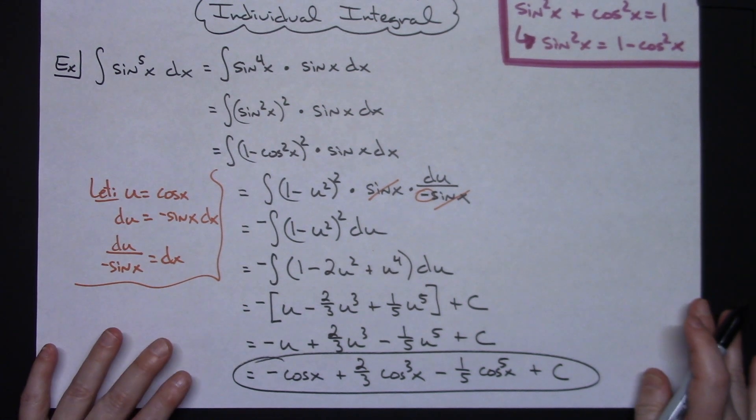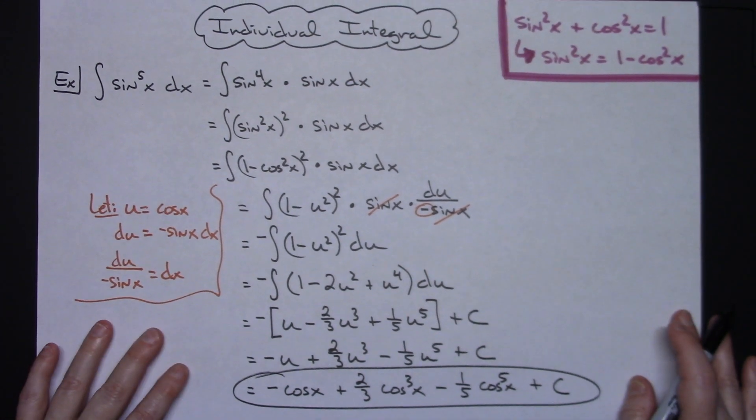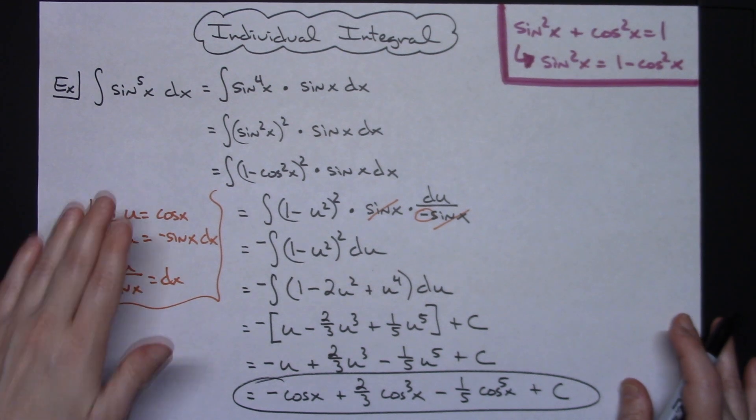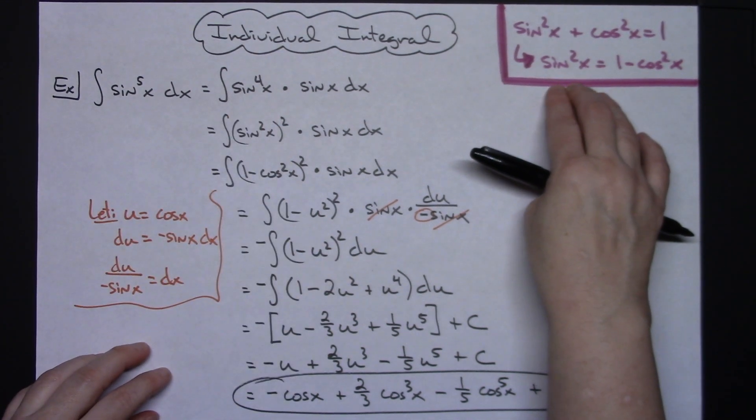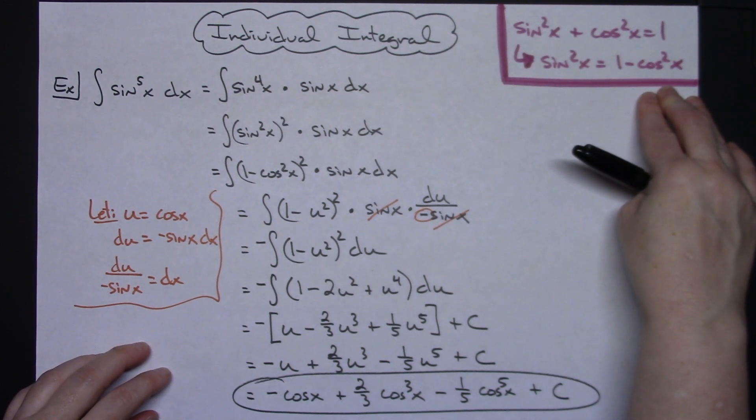So again pretty straightforward after you make that initial substitution there. Understanding how to break that up so that you can get it to a sine squared x so that you can do this substitution.